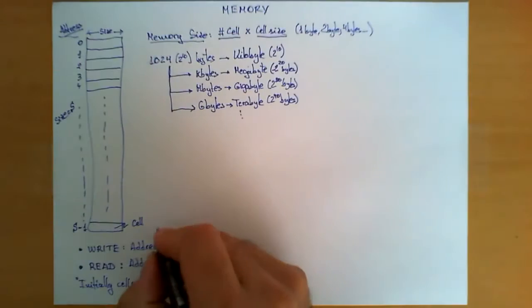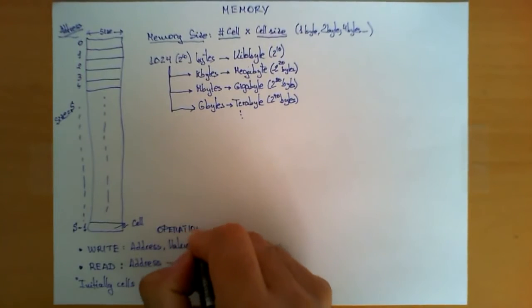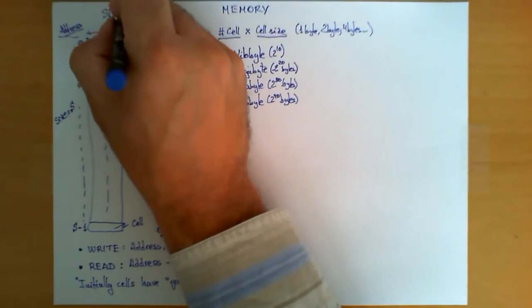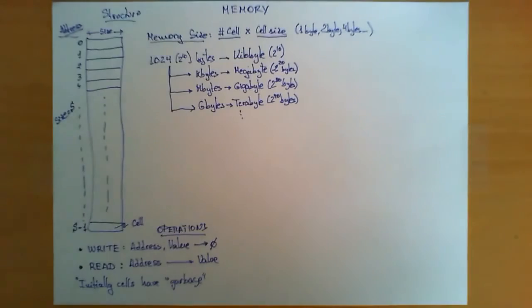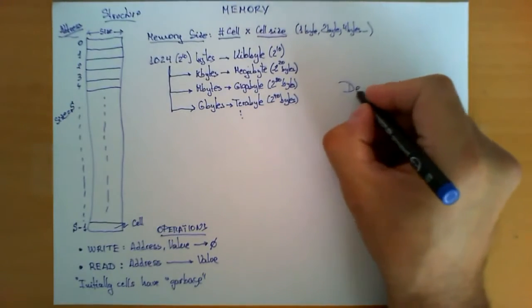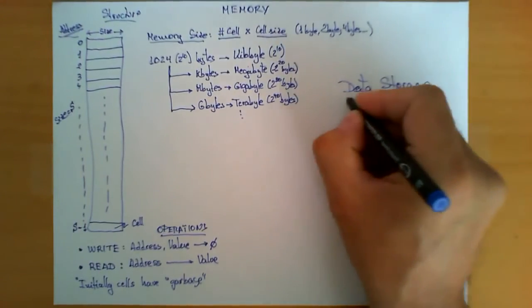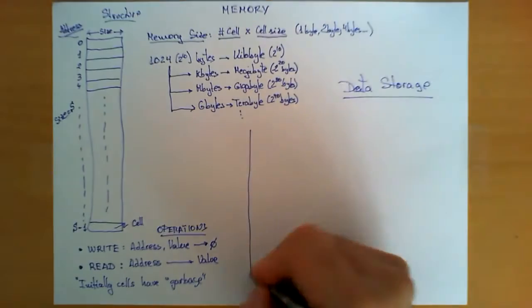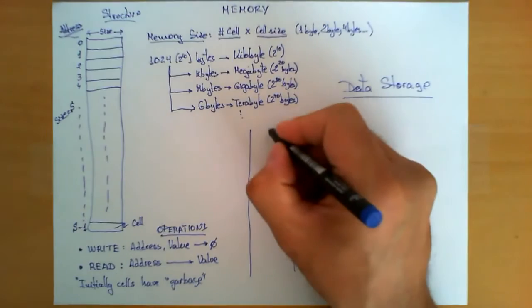After we cover memory size, operations, and the structure, let's talk now briefly about examples. Let's see how do we perform data storage. How do we store data in a memory? And for that, let's assume I have here just a portion of memory.